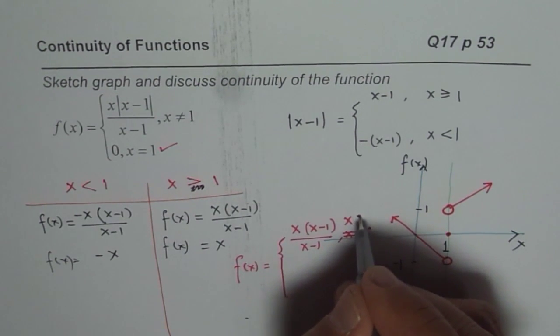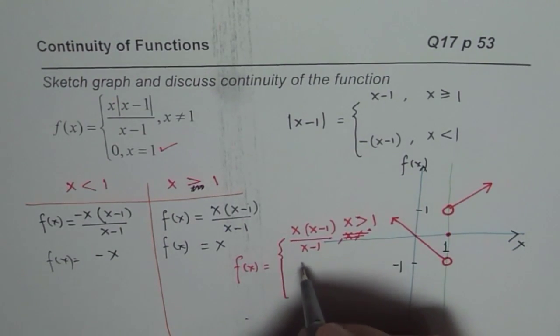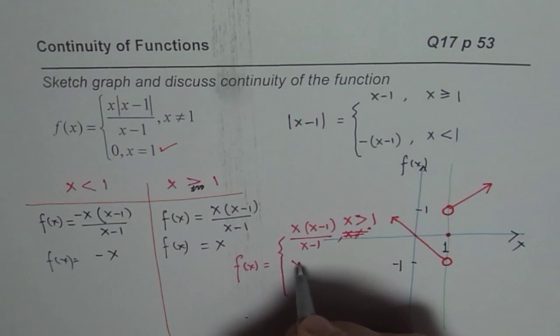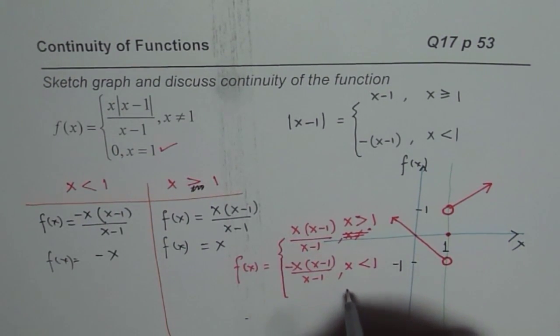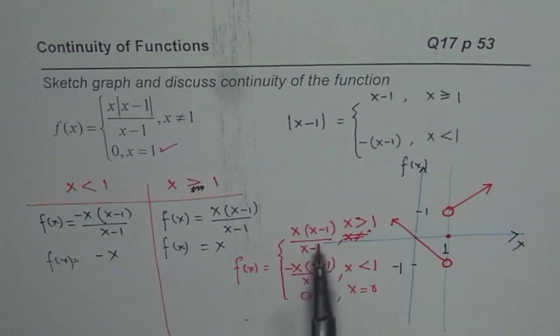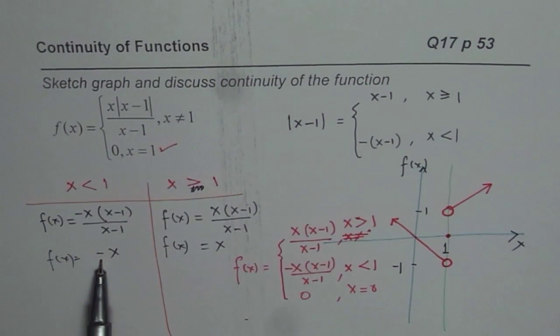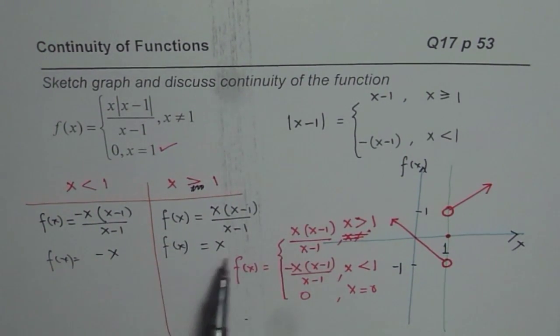So we have taken the positive value when x is greater than 1. Then the second part, we will write this as minus of (x-1) over (x-1) when x is less than 1. And when x is equal to 0, then the value is 0. So that is how the function is. And of course, these two parts simplify to -x and +x. I mean, +x from this side and -x here as shown in that part. So that is how you have to look at it.